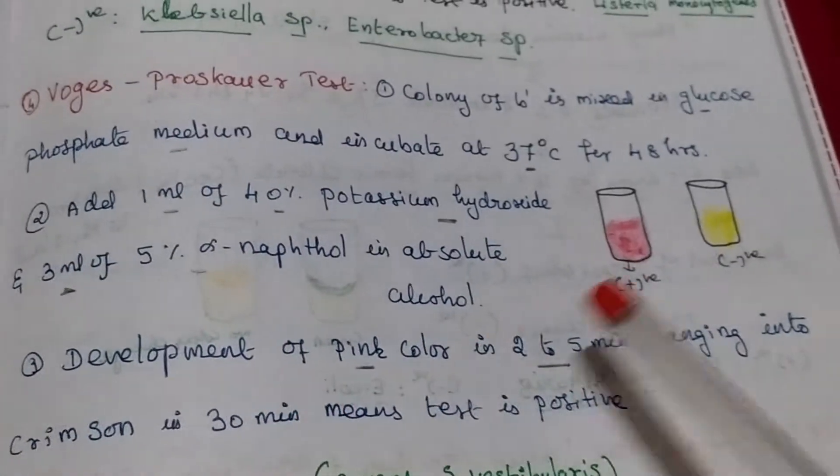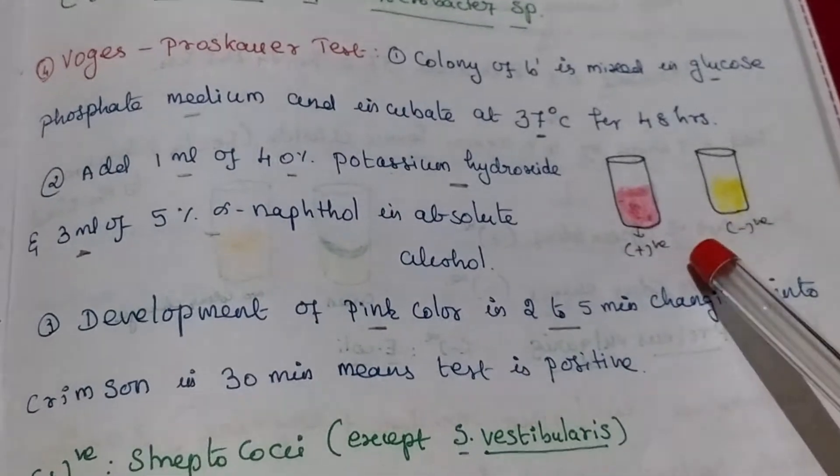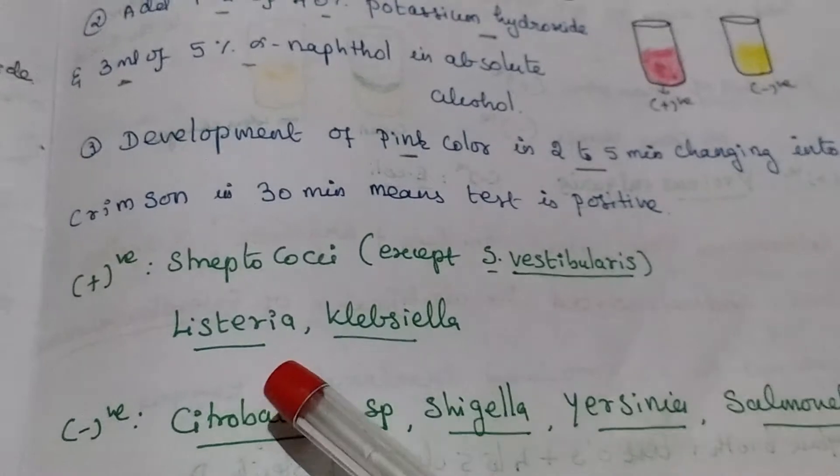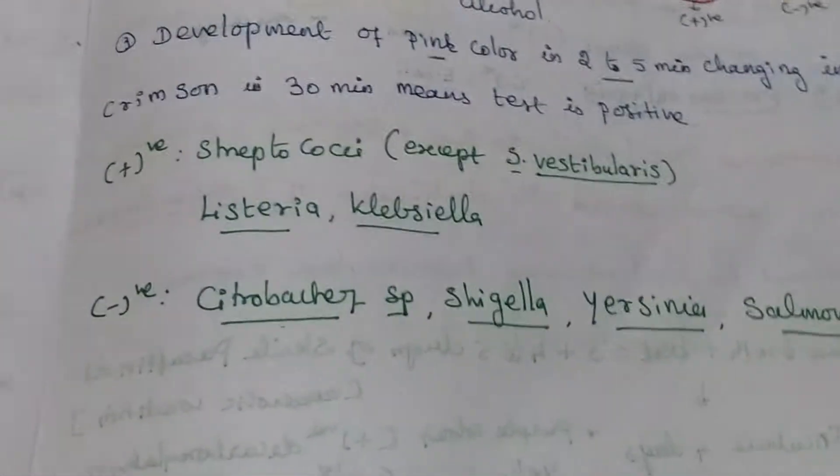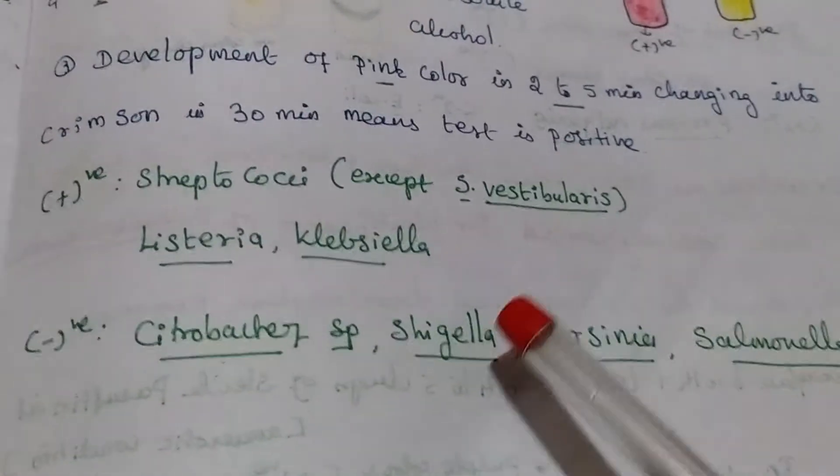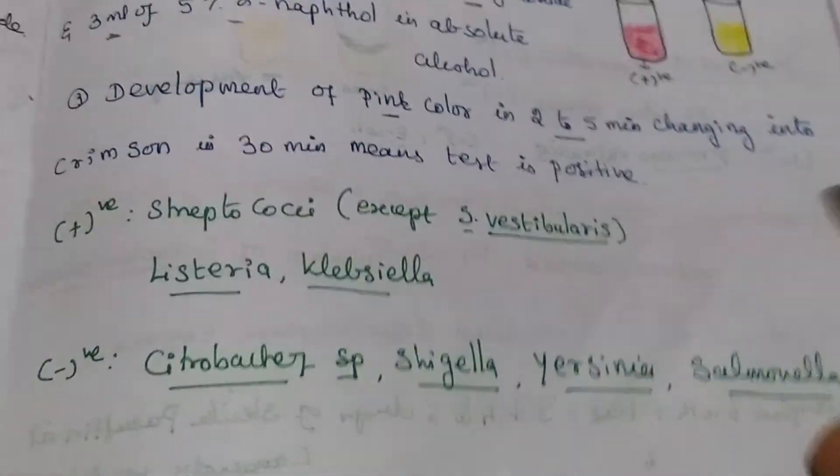The development of pink color indicates positive otherwise negative. Positive organism streptococci, listeria, klebsiella. Negative organism citrobacter, shigella, Yersinia and salmonella.